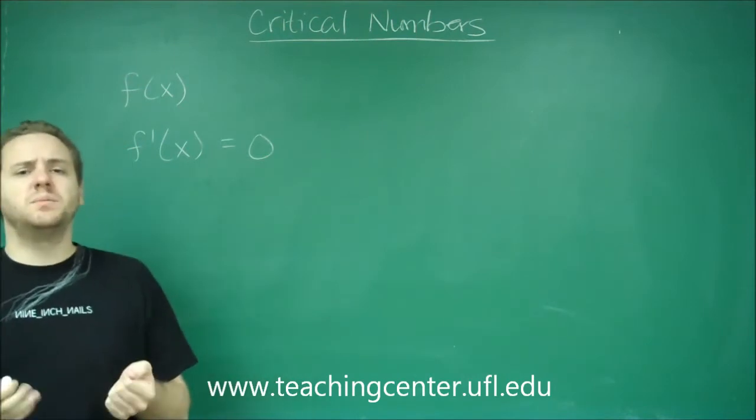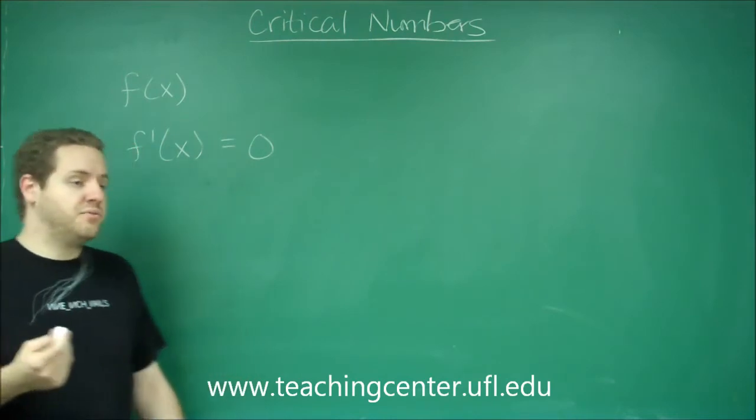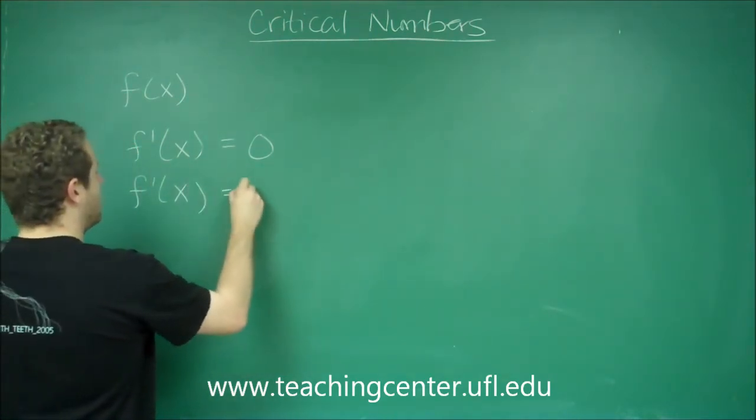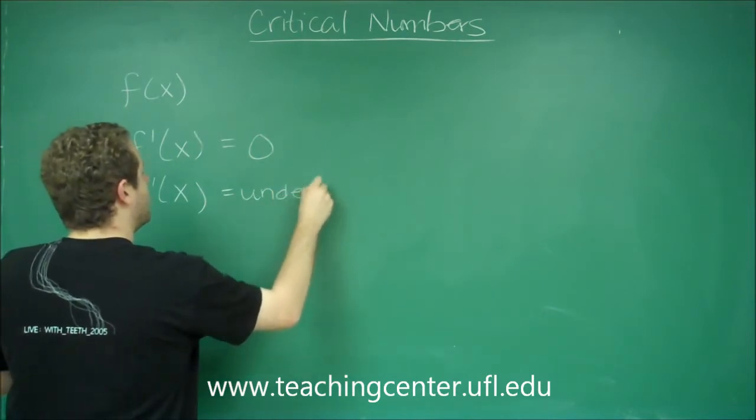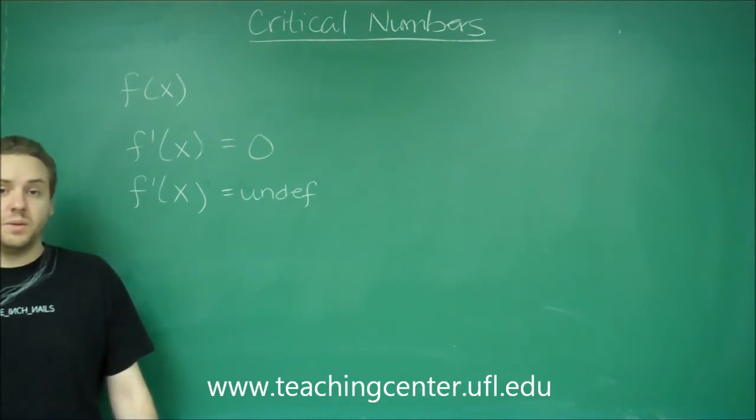For our tangent line to be vertical, we need the slope of our tangent line to not exist, to be undefined. So f'(x) being undefined also is the place where you would have a critical number.